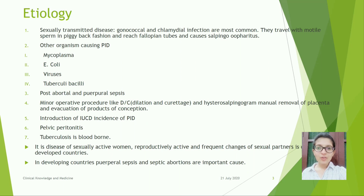Incidence of PID: pelvic peritonitis and tuberculosis are blood-borne. It is a disease of sexually active women. Frequent changes of sexual partners is a key cause in developed countries. In developing countries, puerperal sepsis and septic abortions are important causes.